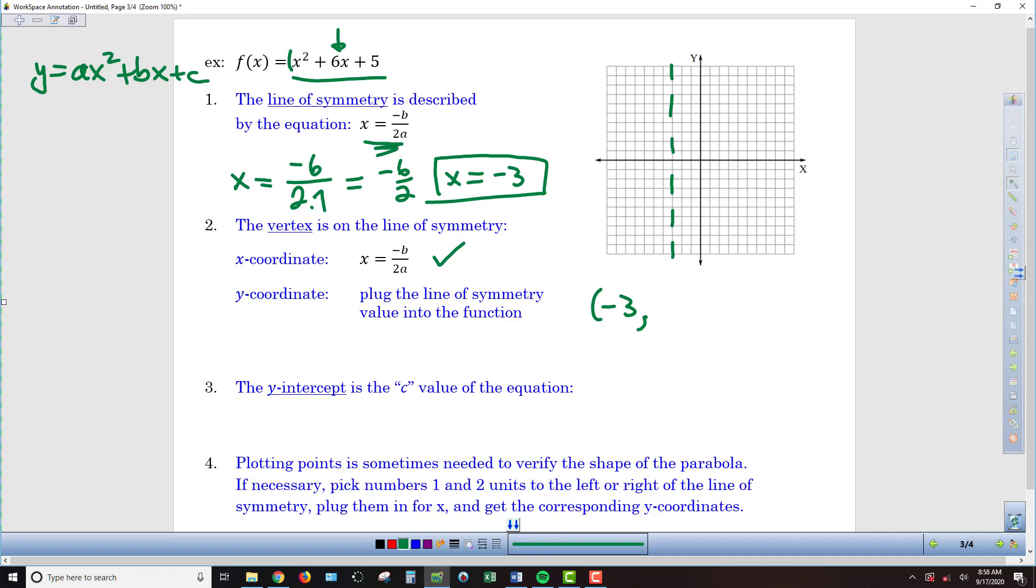The way we generate that is to take that -3 and plug it into our function. So we're going to evaluate this function at -3. I'm going to have (-3)² plus 6 times -3, and then plus 5. So if we keep going, (-3)² is positive 9, plus 6 times -3 is -18, and we still have that plus 5.